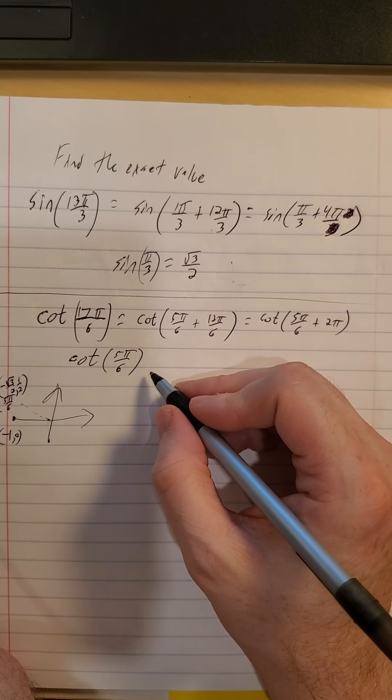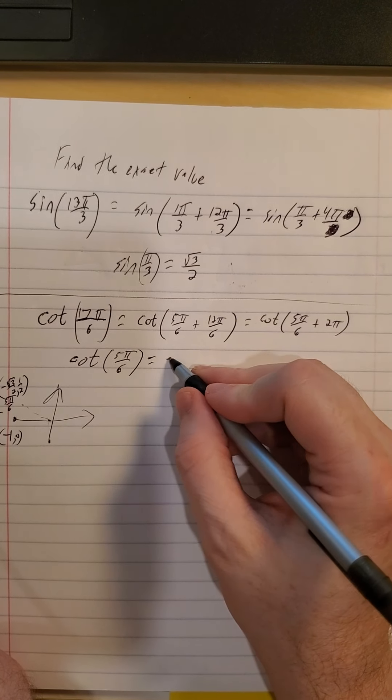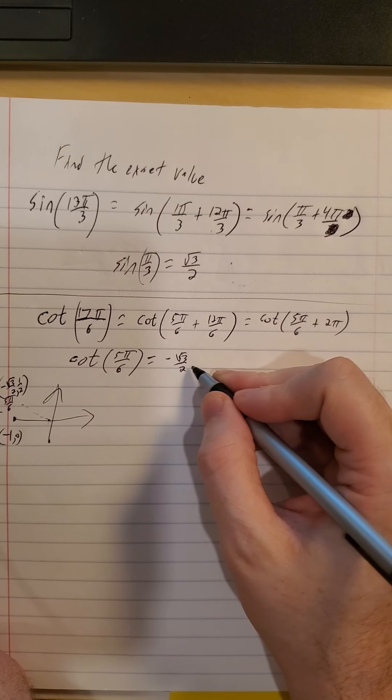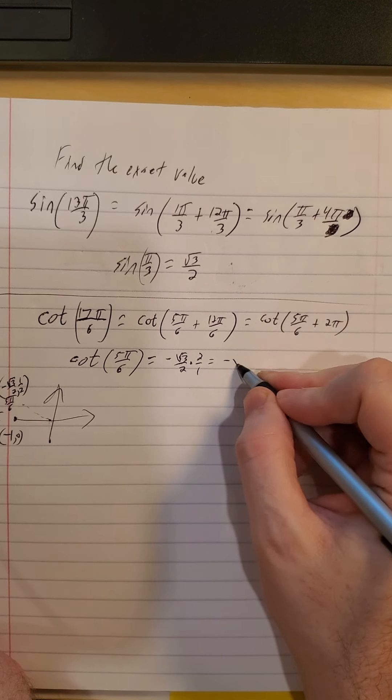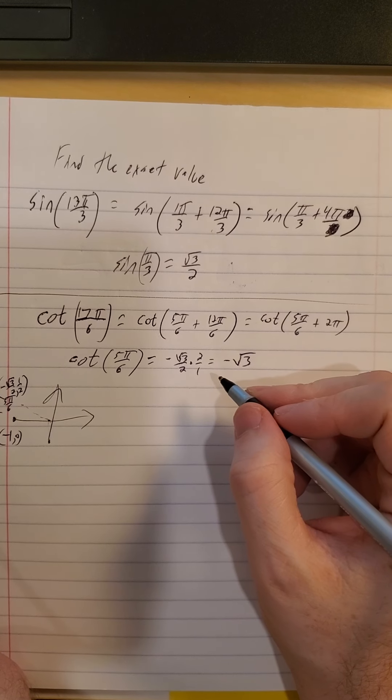So cotangent, remember, is x over y. So negative root 3 over 2 divided by 1 half is the same thing as times 2. So negative root 3 would be our exact value.